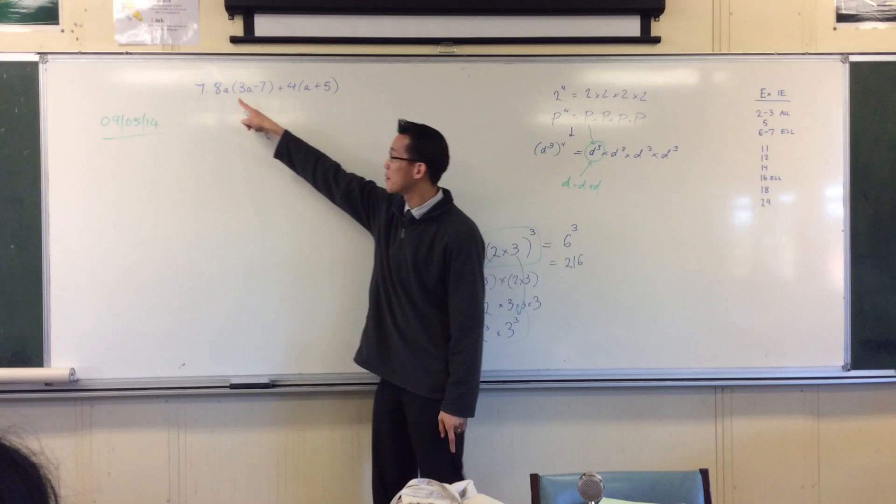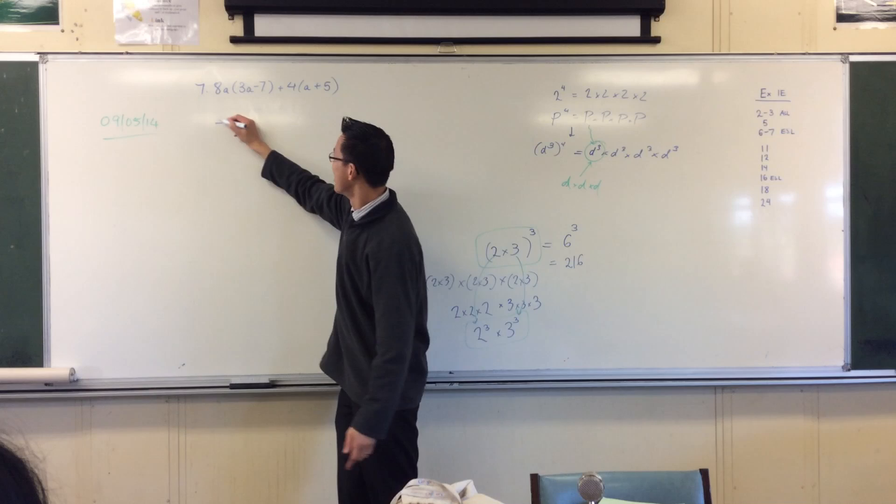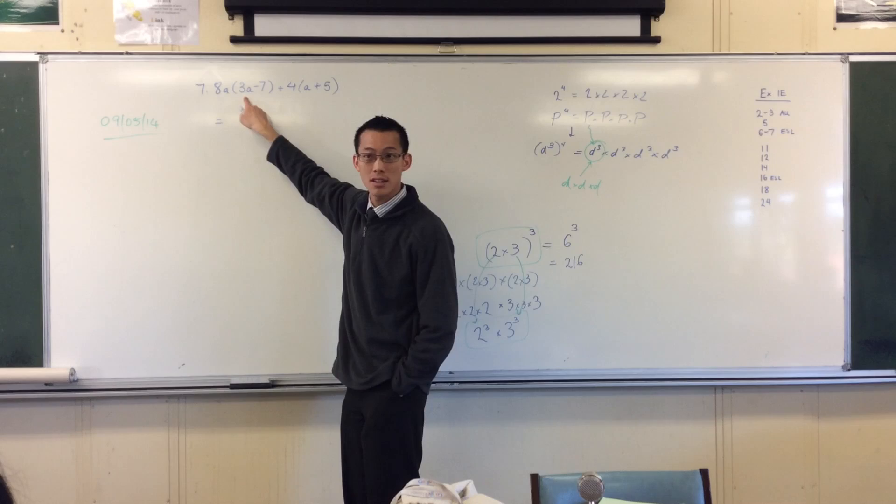So 8a is coming to these guys' house, so he needs to greet both of them and say hey, how you going. So first he does 3a. 8a times 3a, what's that? 8 times 3 is 24, a times a we can write that as a squared.